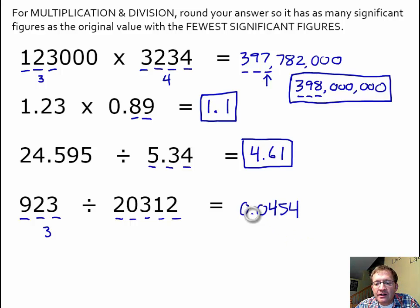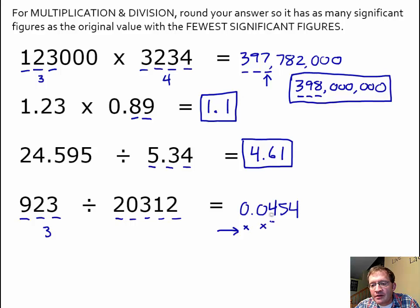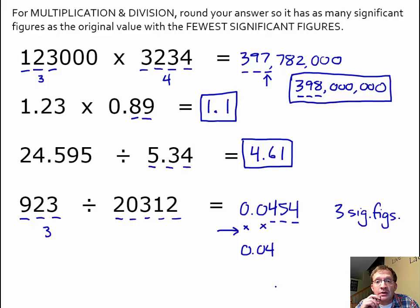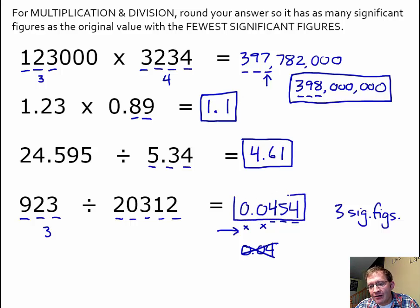Make sure you're counting carefully with the decimal point present. Count from left to right with the first non-zero being where you start. Don't count leading zeros as significant — they're not significant. We start counting with the first non-zero: 4, 5, 4. Those are significant — three significant figures, or sig figs for short. The zeros are placeholders and the 4, 5, 4 are precise. Be careful — some folks think 0.04 has three significant figures, but it only has one. 0.0454 gives those three significant figures required in the finished answer.